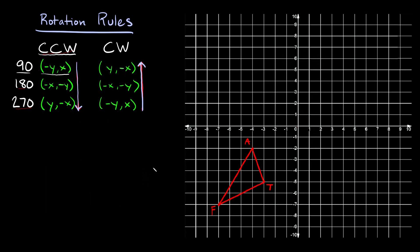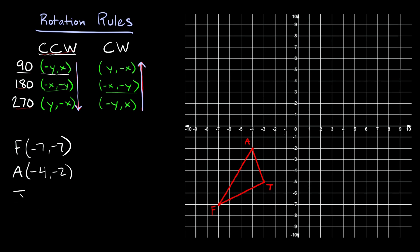Let's try another one. Here we have triangle FAT, and this time we're asked to rotate it 180 degrees in the clockwise direction. Remember that 180 degrees is the same for both counterclockwise and clockwise, so it doesn't matter which we use. This is our starting position, so a 180-degree rotation should land us on the opposite end. First, write down the coordinates: F is at (−7, −7), A is at (−4, −2), and T is at (−3, −5).